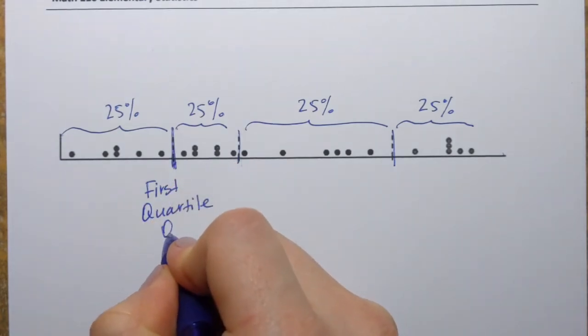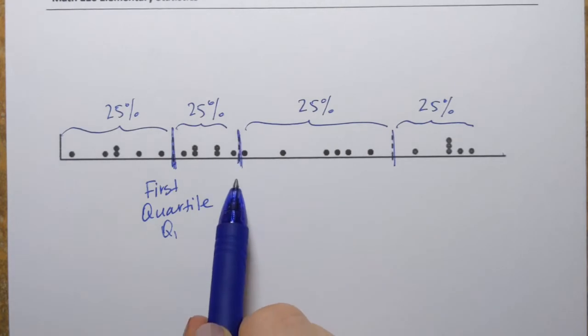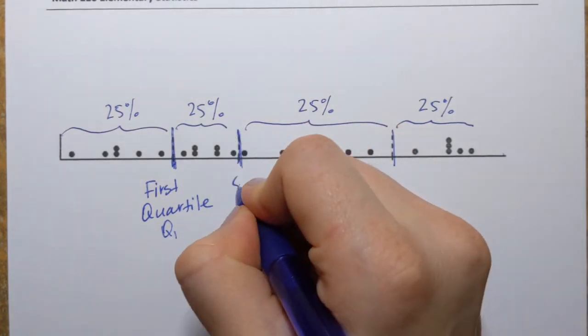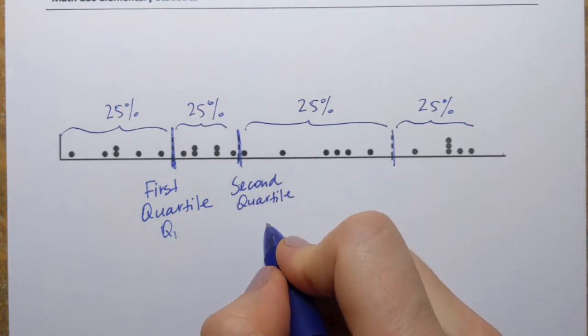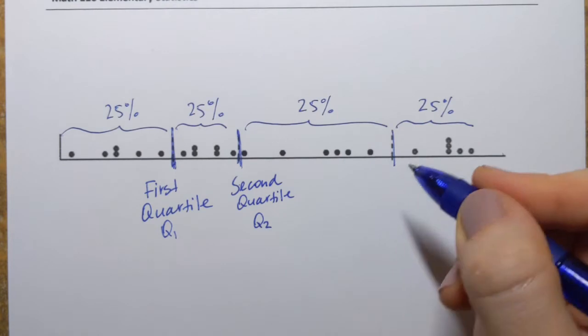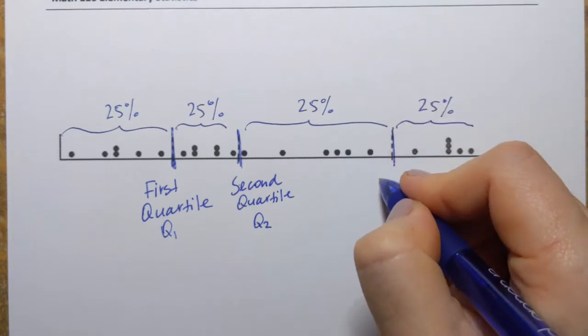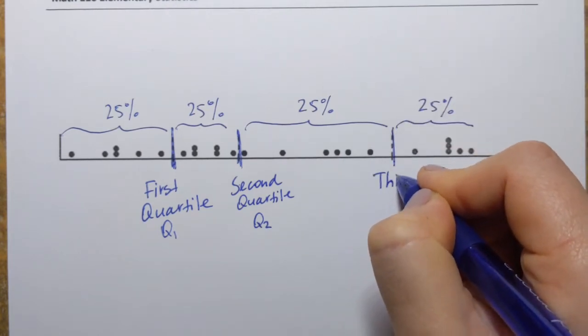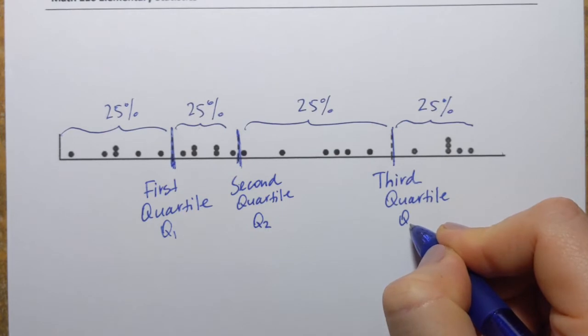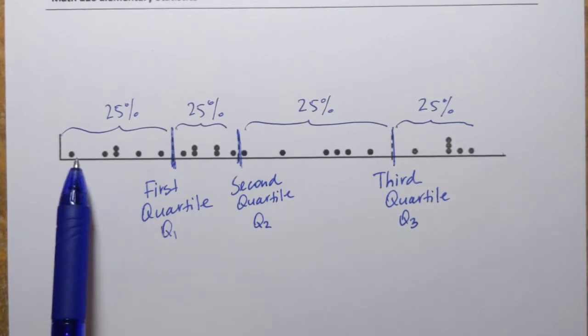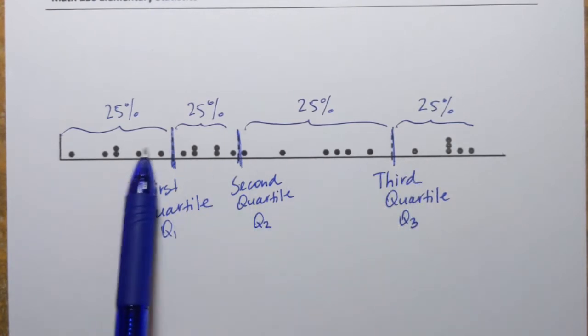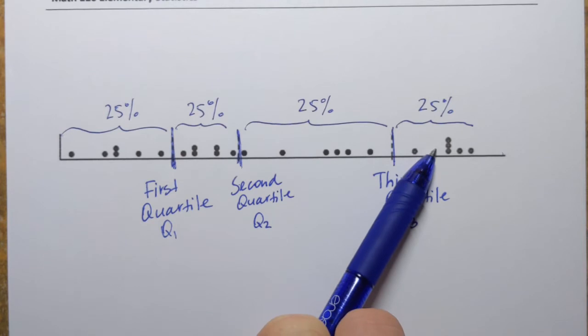Or in short Q1. The next one will be second quartile or Q2, and you may guess it's going to be third quartile right here or Q3. And they're called quartiles because we took our data set and separated it into four parts, in other words, quarters.